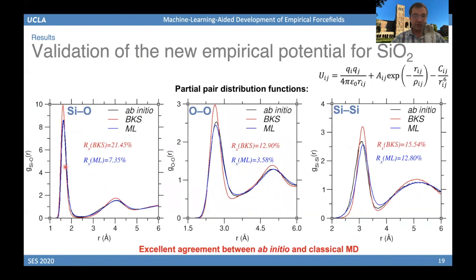Showing the result for silica: the pair distribution functions computed by ab initio simulation are shown in black as the reference. In red is the result from conventional molecular dynamics using the BKS potential, a very common potential for silica. In blue is the result from our machine learning approach. We achieve very good agreement, virtually as good as ab initio simulation, but at a fraction of the cost because classical molecular dynamics is much faster and more computationally efficient than ab initio simulation.